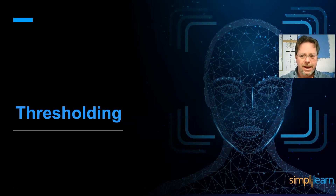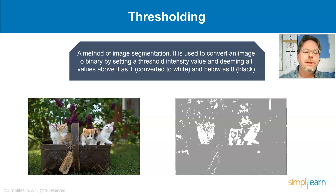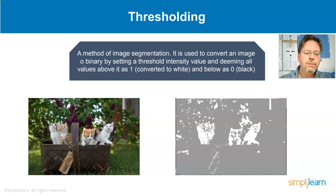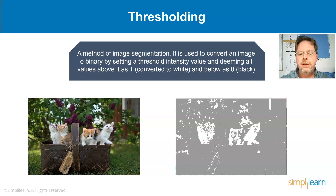Thresholding is another important aspect of image processing — a method of image segmentation. It is used to convert an image to binary by setting a threshold intensity value, deeming all values above it as one (converted to white) and below it as zero (black). In the threshold we're able to actually create a mask of the image, pulling out the cats which appear mostly white while pushing the background further back.